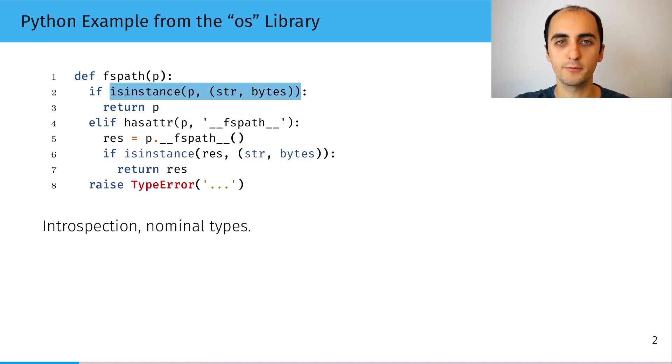Using a first introspection operator, it checks if p is an instance of the string or bytes built-in classes. If not, we check using a second introspection operator if p has a field fspath. And if that's the case, we try calling the method, and we check the result before returning it or raising a type error.